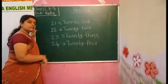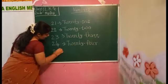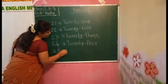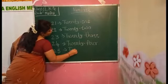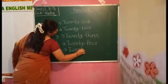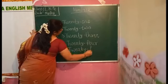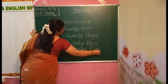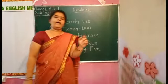After 24, that is 25. The number name of 25 is spelled T-W-E-N-T-Y F-I-V-E. 25.